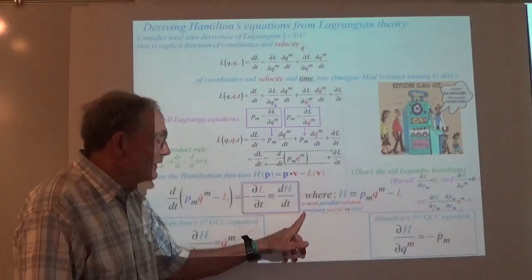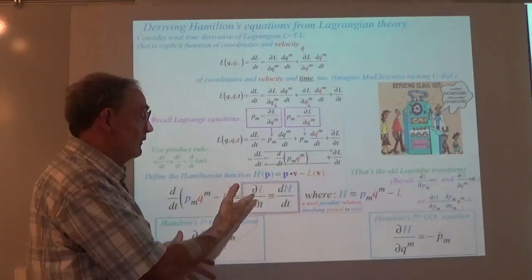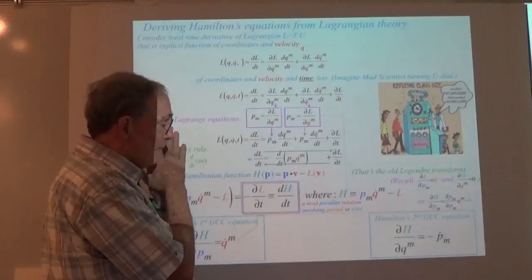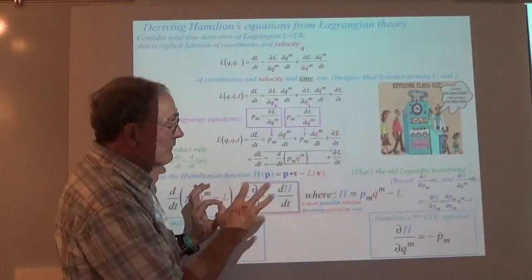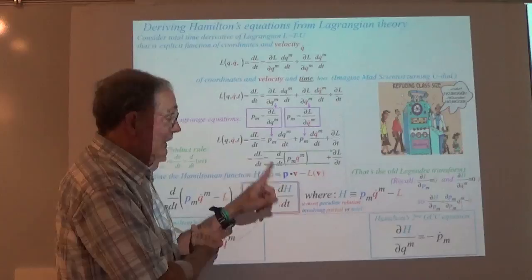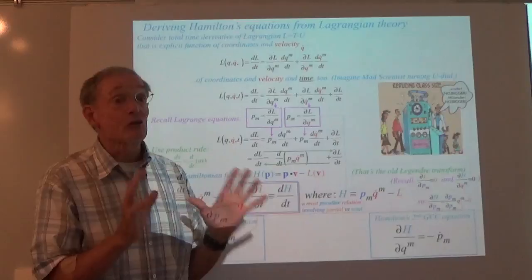What this third equation is telling us is: if the Lagrangian that you came up with doesn't have any explicit dependence on time — in other words, no mad scientist, letting the system go without mucking it up by turning some knobs — if that has no explicit dependence on time, then this thing is zero. H is a conserved quantity. This is your energy conservation. The Hamiltonian is the total energy.